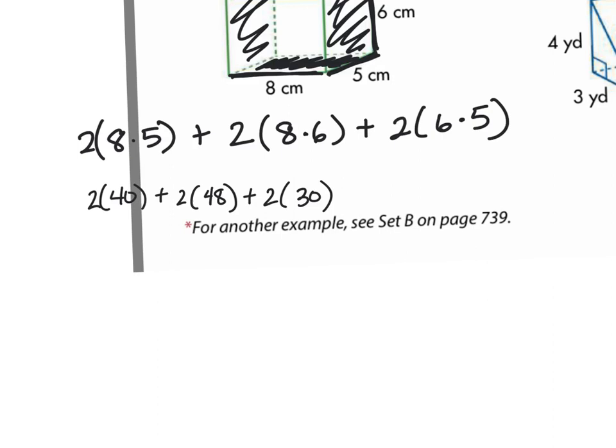The order of operations says that I do all the work inside the parentheses first. Then I can complete the multiplication that I have left. And finally, I can add all my numbers together. My answer is 236 centimeters squared.